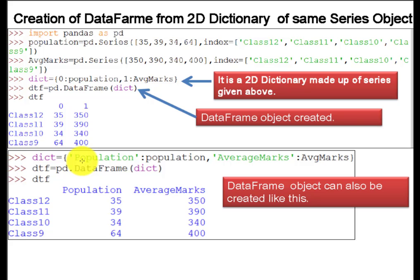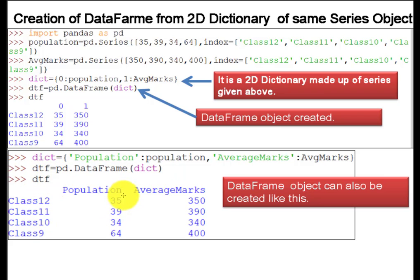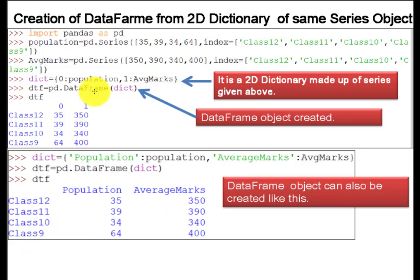The dictionary will have 'population' as the key for the population values and 'average marks' as the key for the average marks values. Simply convert it into the DataFrame object using pd.DataFrame with the dictionary, then execute dtf. You can see that column 0 becomes 'population' and column 1 becomes 'average marks'. The index remains class 12, class 11, class 10, and class 9. This is the way to create a DataFrame from a 2D dictionary of same series objects.